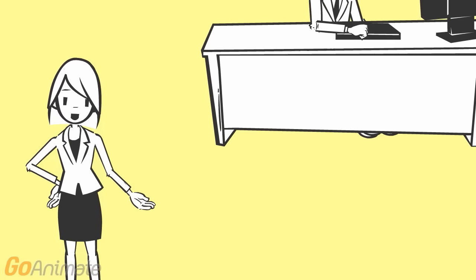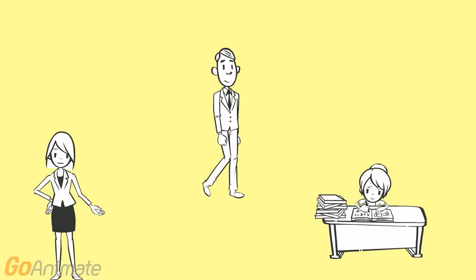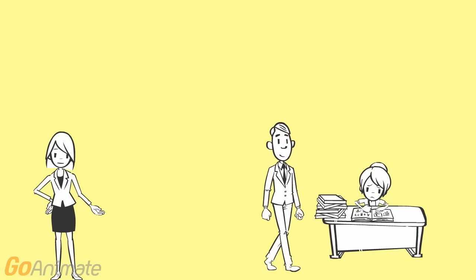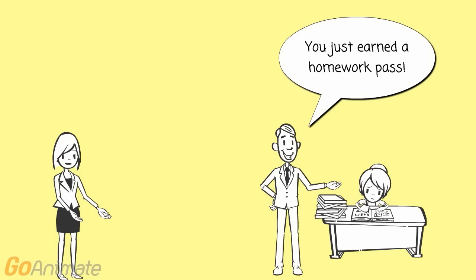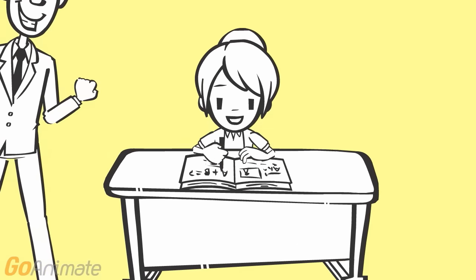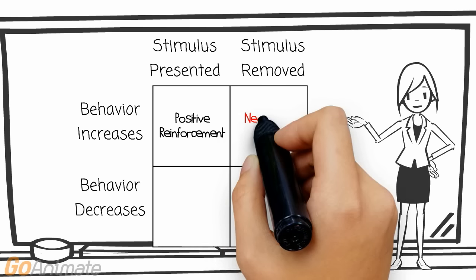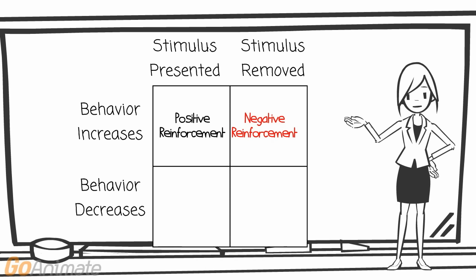For our next student, we again have a good student who is working diligently on her coursework. As a consequence, he could remove some of her work, such as dropping a quiz or removing a homework assignment. This would make her happy and want to continue to work hard. In this example, a stimulus was removed, the quiz or homework assignment, in order to cause the student's good behavior to increase, which would be negative reinforcement.